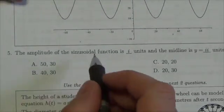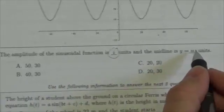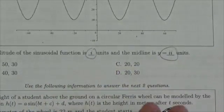And here we read that the amplitude of the sinusoidal function is i, and the midline is at y equals ii. Okay, one and two.